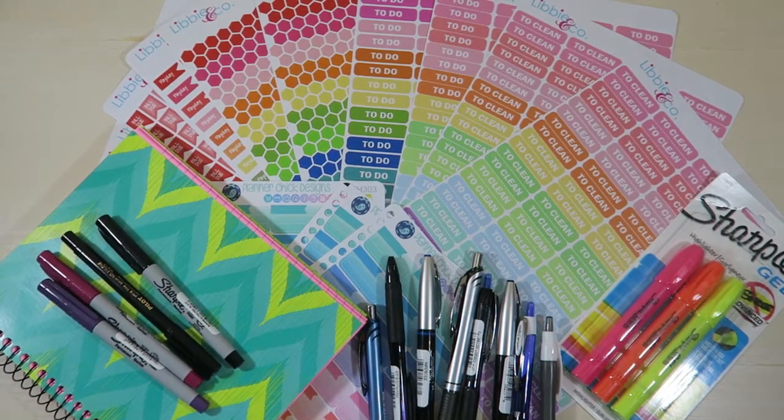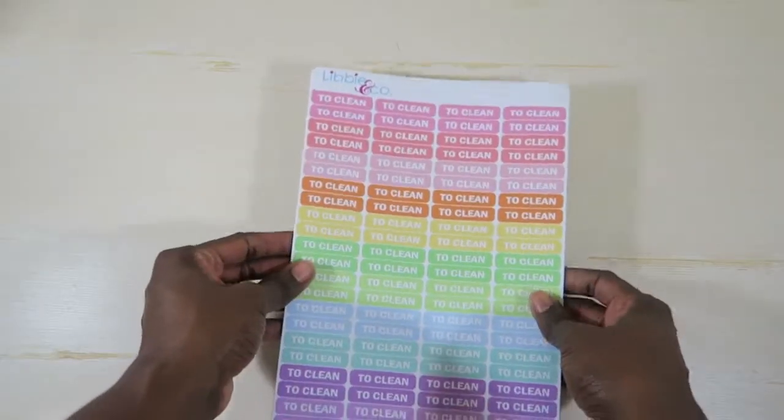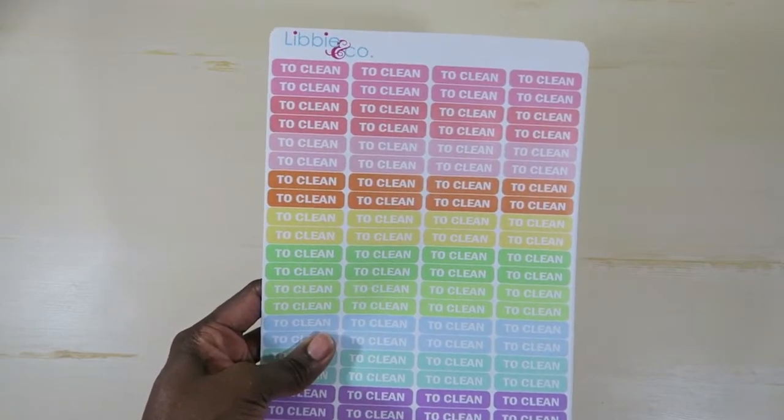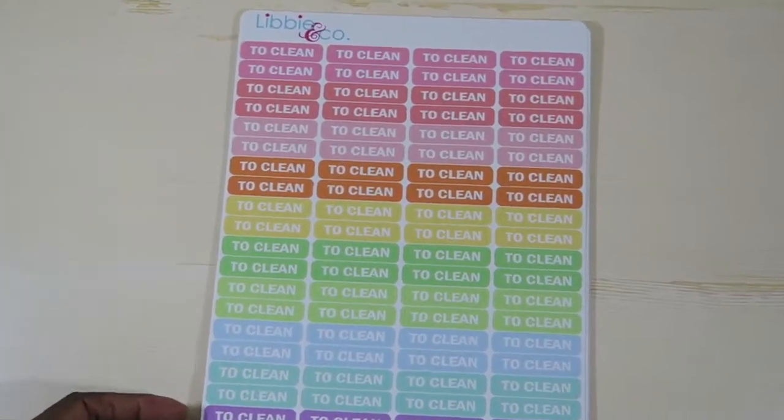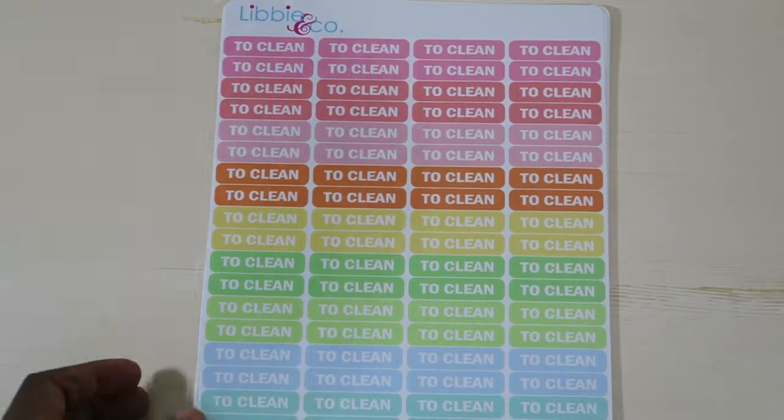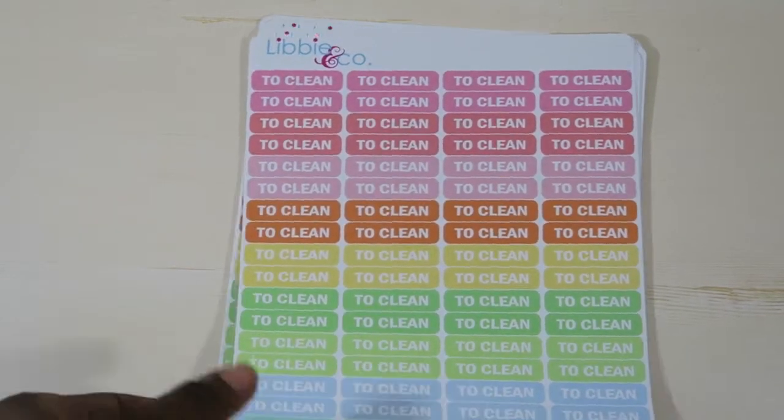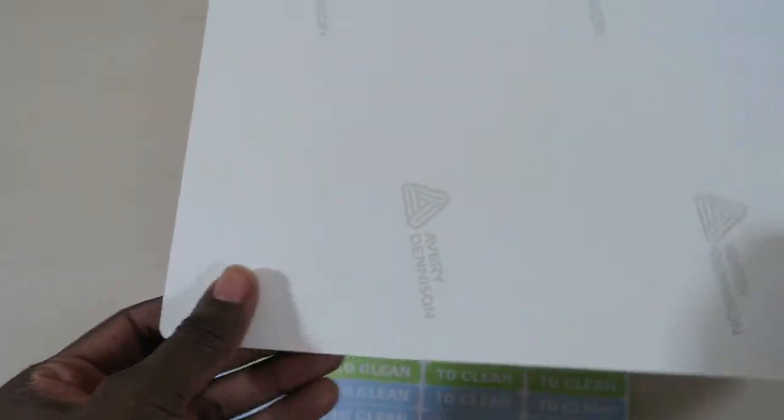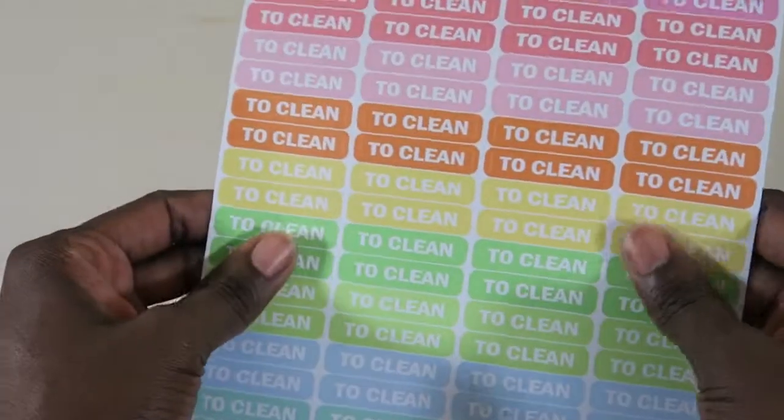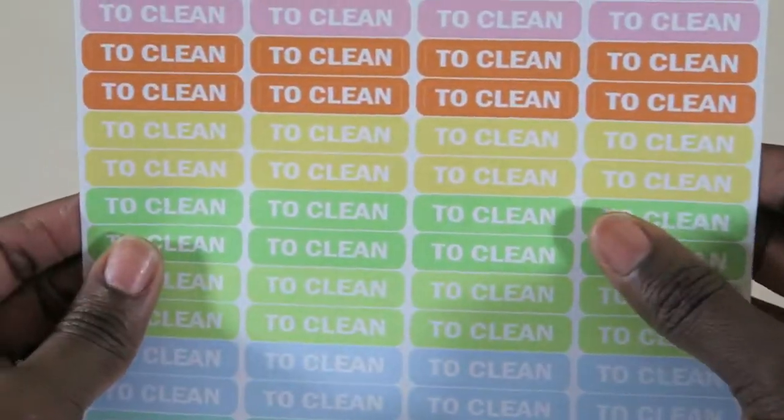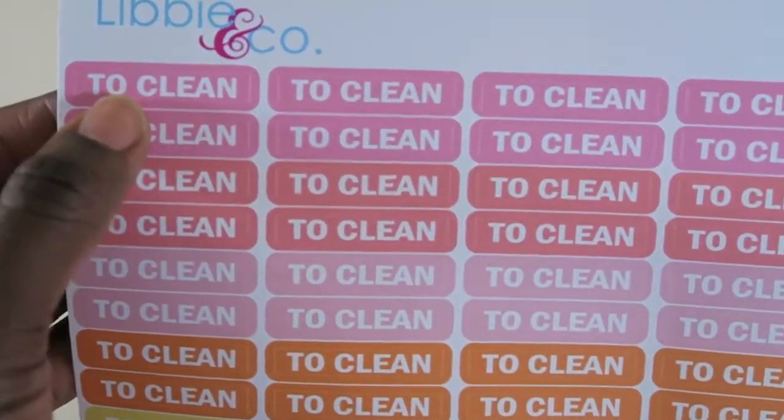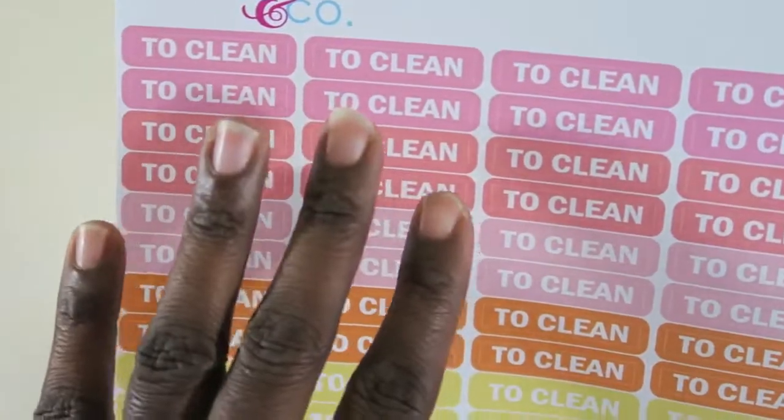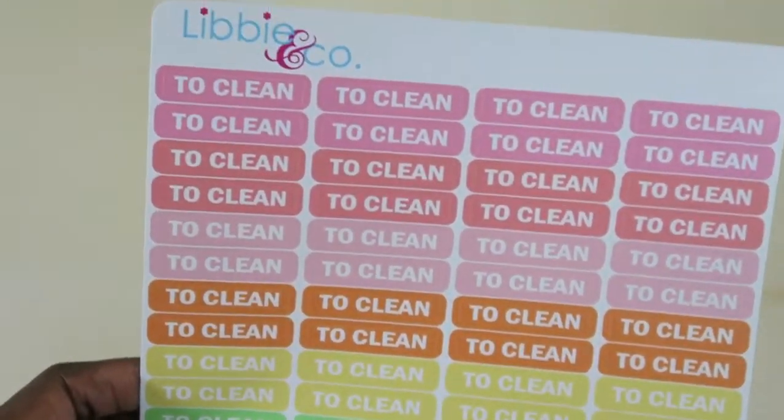First up are the stickers I ordered from Libby & Co. This is like one of my favorite sticker companies on Etsy. Her quality is really, really good—very thick paper. She uses Avery and they are a semi-gloss finish. You definitely cannot write on these stickers with pens; you have to use permanent marker.